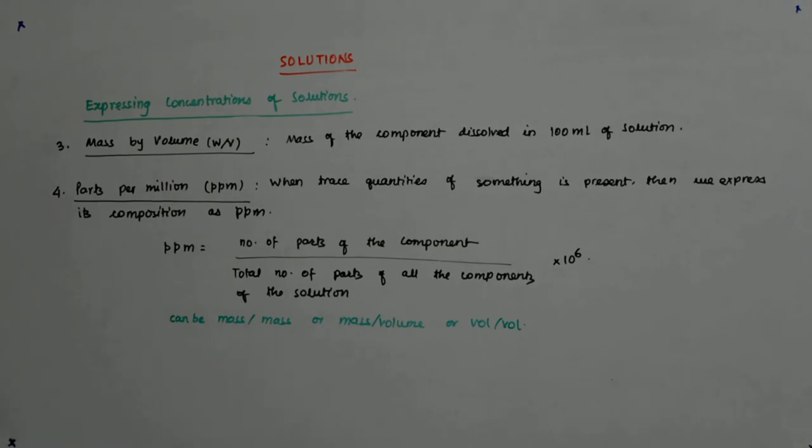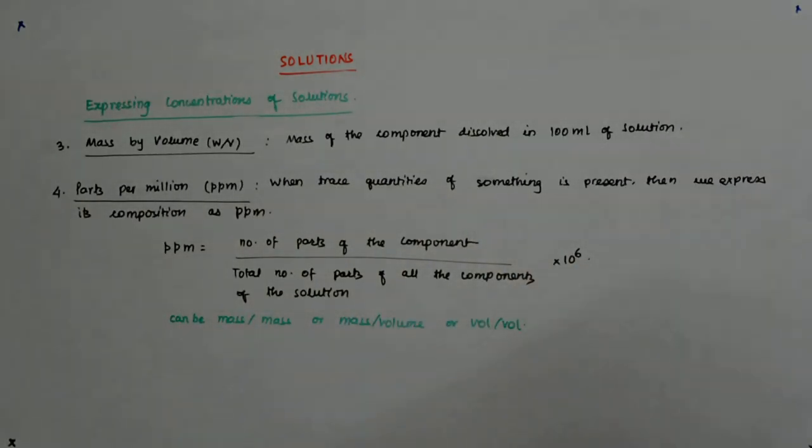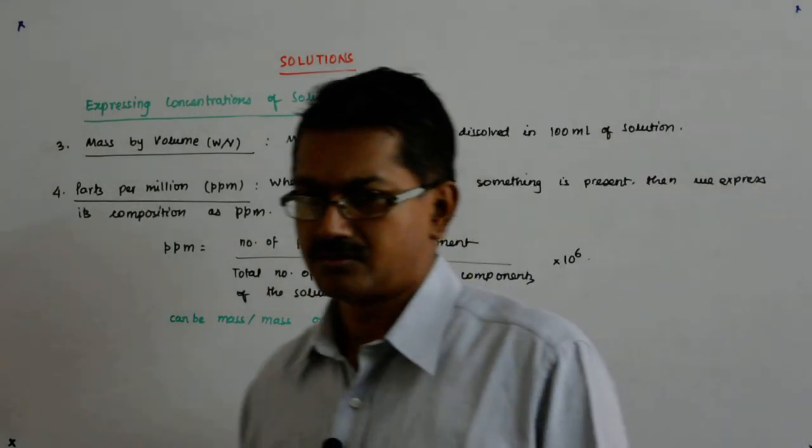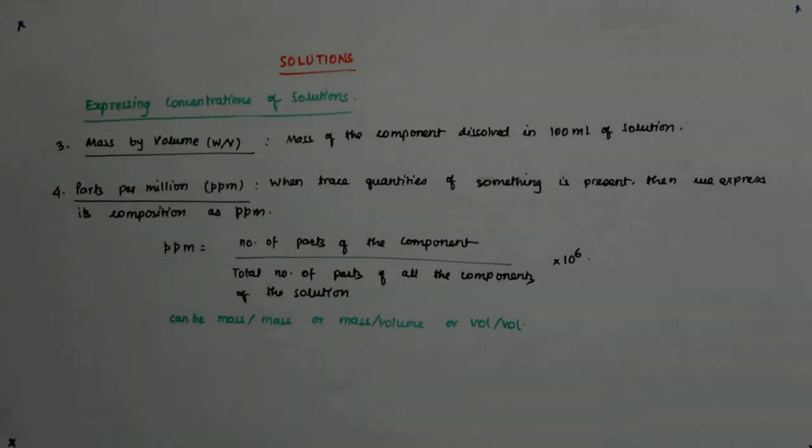A liter of sea water contains about so many grams of dissolved oxygen. Such small amounts are also expressed as 5.8 gram per 10 to the power 6 gram. So 5.8 gram of oxygen per 10 to the power 6 gram of seawater. So that is 5.8 ppm of oxygen. Now here it is mass by mass. Correct? Here it is mass by mass.